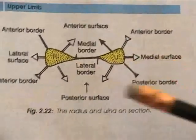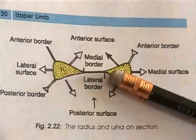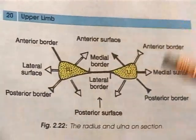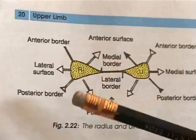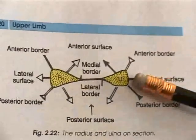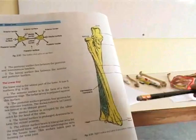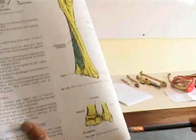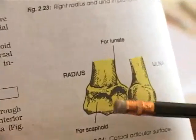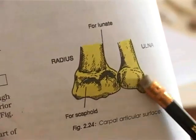This is the cross-section of the radius and ulna. The lateral surface of the radius is large and the medial surface of the ulna is large. The interosseous border is the medial border of the radius and the lateral border of the ulna. During pronation, the radius turns over the ulna — the ulna remains almost fixed while the radius turns over and carries the hand with it. The lower end of the radius articulates with the proximal row of carpal bones: the scaphoid is lateral and the lunate is medial, while the ulna articulates with the triquetral bone.